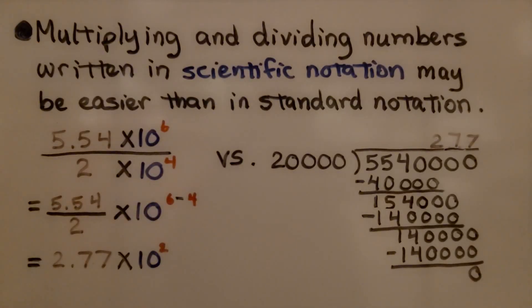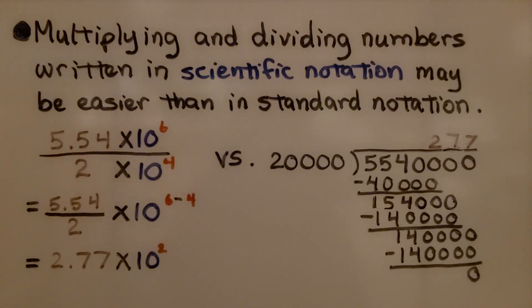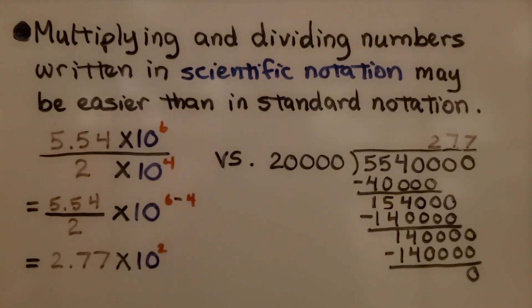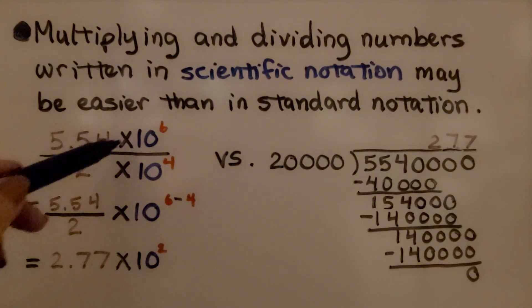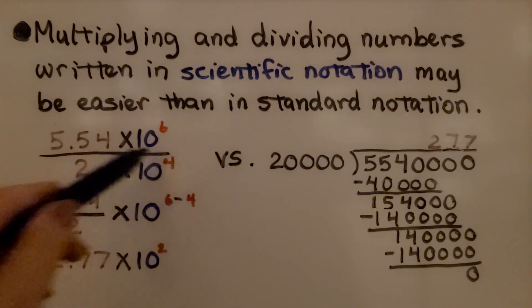However, multiplying and dividing numbers written in scientific notation may be easier than in standard notation. Here we have 5.54 times 10 raised to the 6th power being divided by 2 times 10 raised to the 4th power.